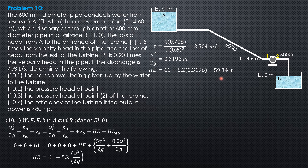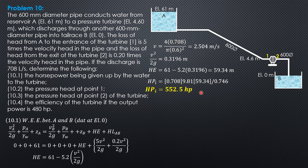The horsepower being given up by the water to the turbine is the horsepower input, which is Q times gamma of water (weight flow rate) times the head extracted, divided by 0.746, with gamma of water equal to 9.81. So the horsepower given up by the water to the turbine is 552.5 horsepower.